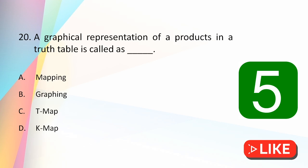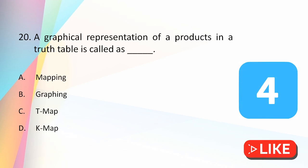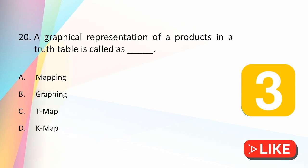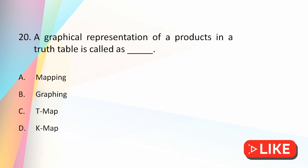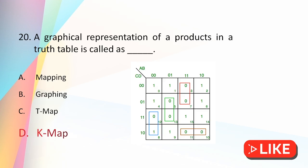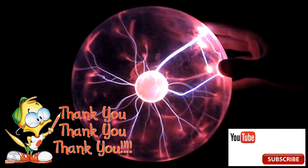A graphical representation of a product in a truth table is called: mapping, graphing, T-map, or K-map? The answer is K-map — the graphical representation of products in a truth table is called the Karnaugh map (K-map). That is all for this video, thank you for watching.